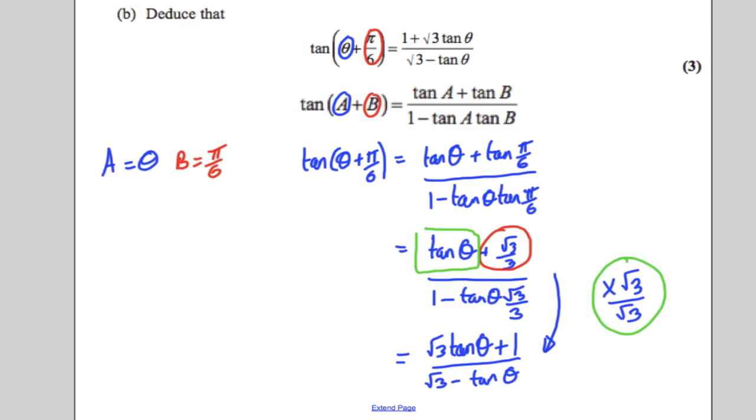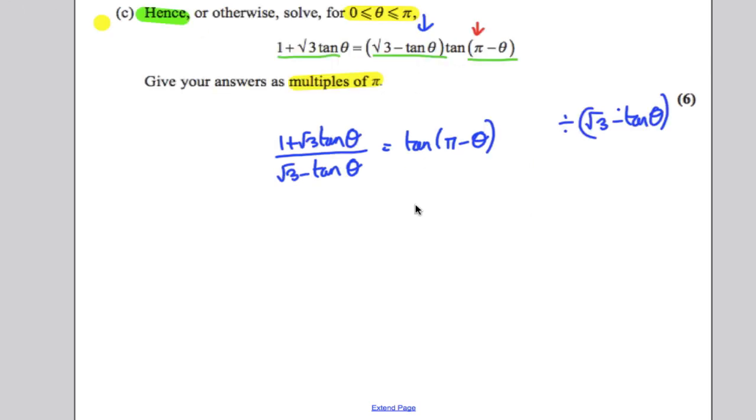Now that looks familiar because that there is, from what we did in part B, tan of theta plus pi by 6. So the only thing we can do here is replace this by tan of theta plus pi by 6, and we know that's equal to tan of pi minus theta.